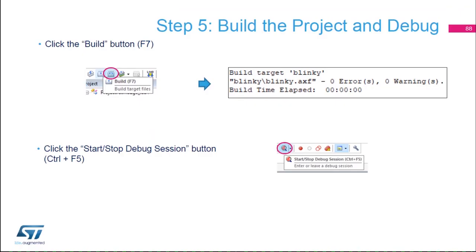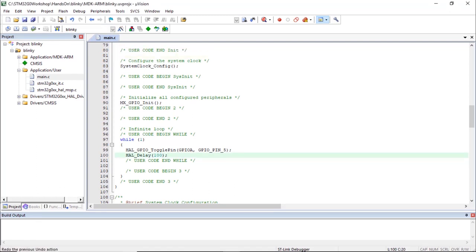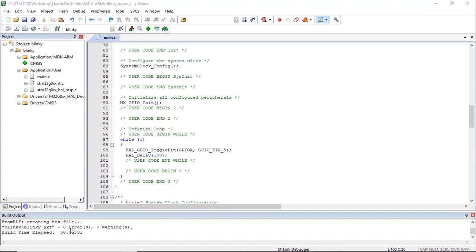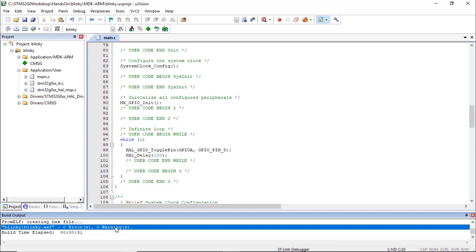Now we're going to build the project and enter the debug session. Save main.c, then click Build or press F7. The project is built with zero errors and zero warnings.